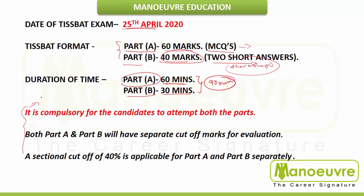It is compulsory for candidates to attempt both parts — you have to give equal weightage to both. Both Part A and Part B will have separate cut-off marks for evaluation. The most important thing is that a sectional cut-off of 40% is applicable for Part A and Part B separately, so you have to practice both sections properly.